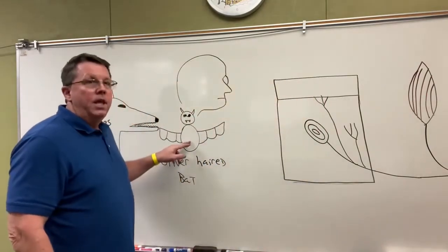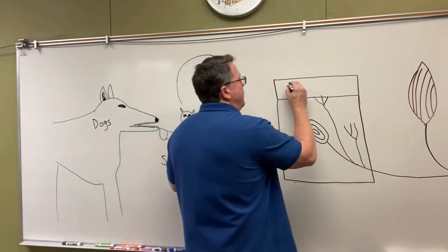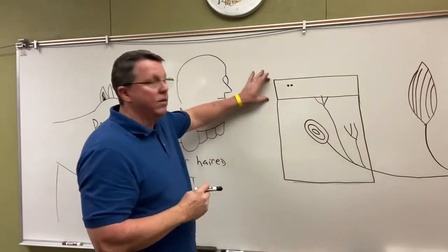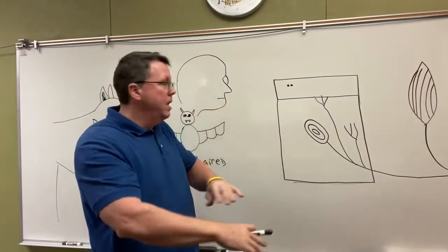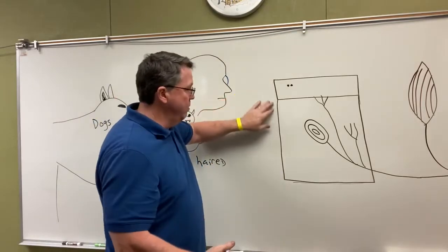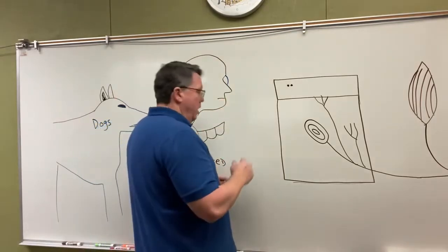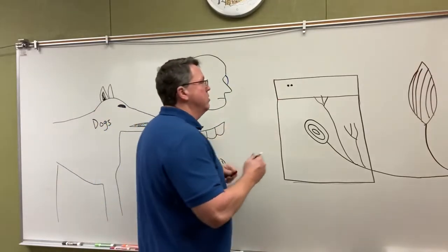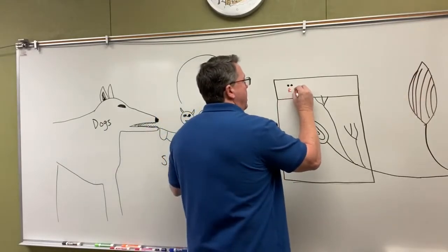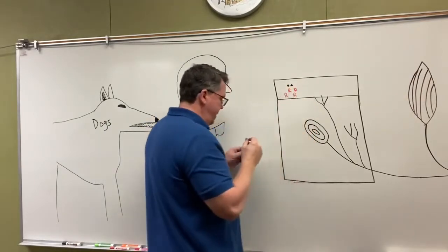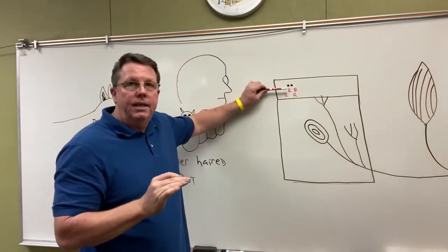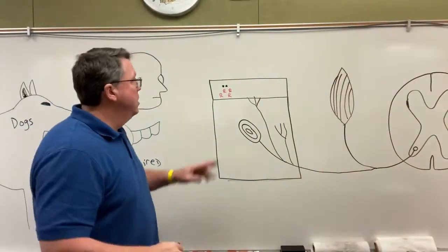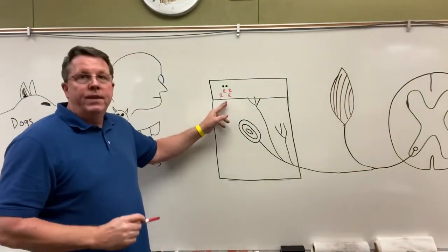Let's say our bat bites the skin. Here's a skin cell — the top part is the epidermis and the bottom part is the dermis. If rabies gets inside the body through the skin, it can start to multiply. Importantly, you don't even have to break the skin for rabies to get inside and start multiplying.